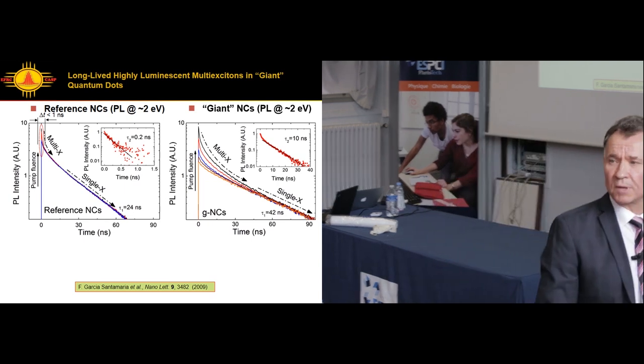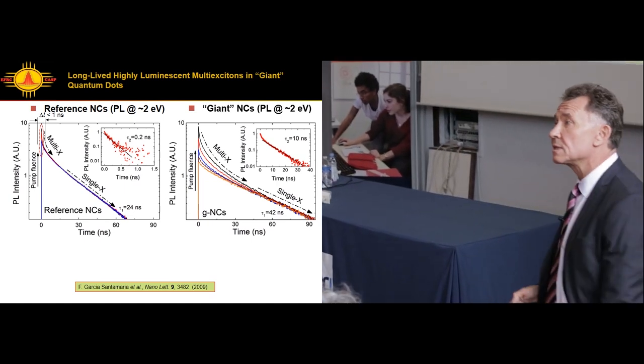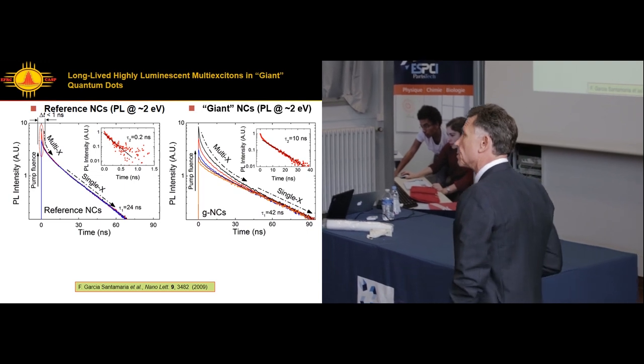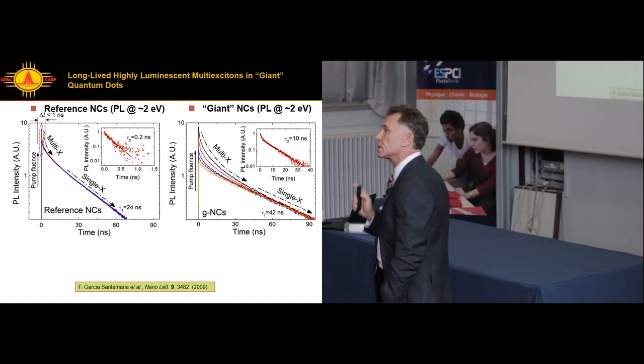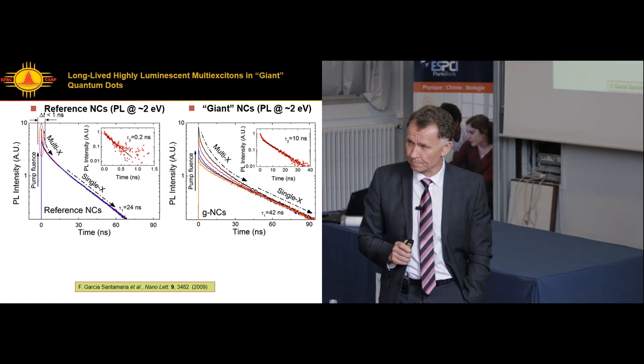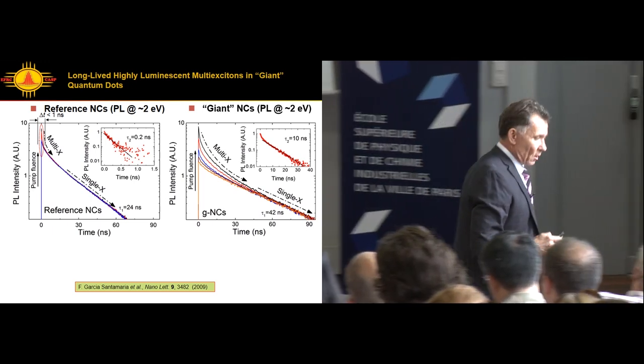This is measurement by Florin Garcia Santamaria in our lab, looking at Auger recombination in standard quantum dots versus giant quantum dots with the same band gap. This is typical signature of Auger decay, biexcitons and multi-excitons. In giant dots, Auger decay became very well resolvable. This long nanosecond time scale decay becomes much slower than in standard nanocrystals. It told us the suppression of blinking was largely related to suppression of Auger recombination.